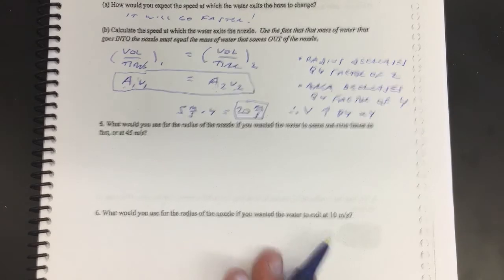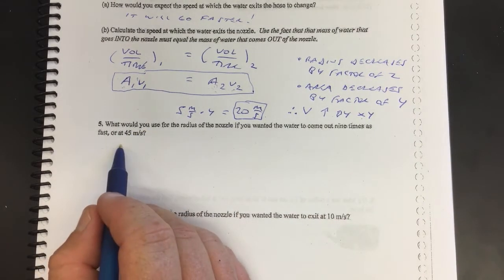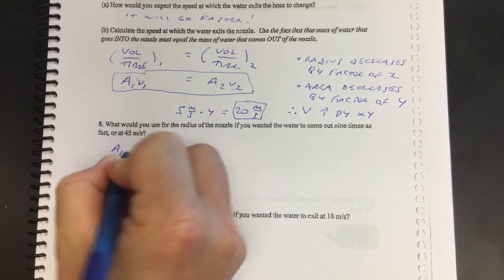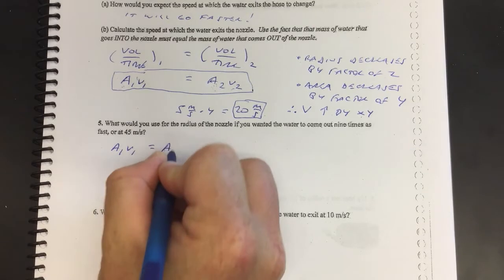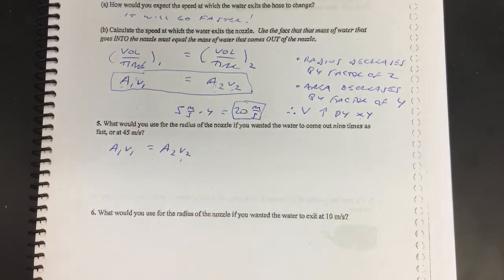Now to see what I mean or why that's a powerful approach, is you can do things like, okay, what would you use for the radius if you want the water to come out nine times as fast? Well, so again you can look at it like this: A1 v1 is A2 v2. Well, so if you want this to be nine times bigger...